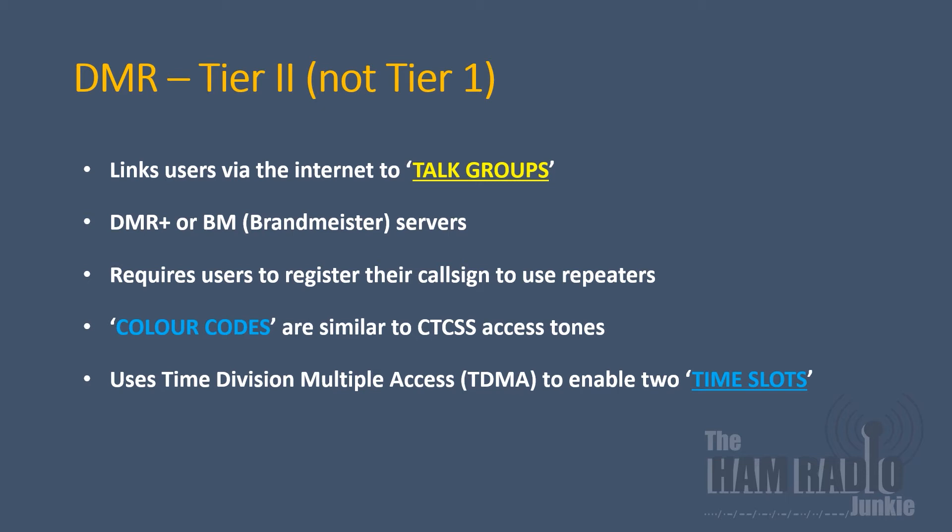The next digital mode that we're going to explore is DMR. For radio amateurs, we use Tier 2 sets. You may see some for sale marked Tier 1 — these are not compatible with our systems. Users of DMR connect to the internet via talk groups and they normally operate on two different servers: the DMR Plus, or in the UK it's known as Phoenix, or the BM Brandmeister server. Users are required to register their callsign to use repeaters and they will be given a number which needs to be entered into their radio to give them access to the system.